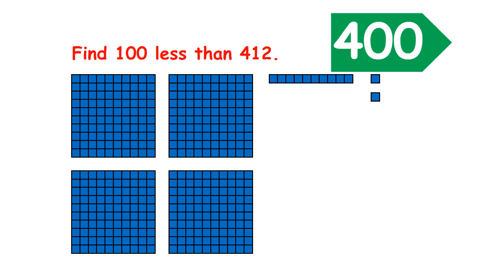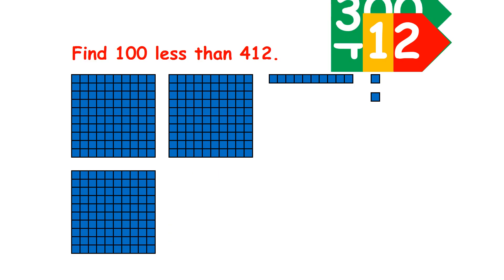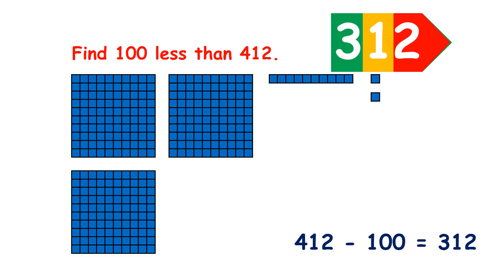Now we have four hundredths, one ten, and two units — four hundred and twelve — and we want to find one hundred less. So what is one hundred less than four hundred and twelve? If we take away a hundred, now we only have three hundredths, one ten and two units, so four hundred and twelve minus one hundred equals three hundred and twelve.